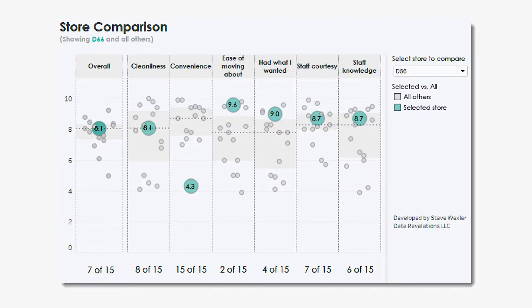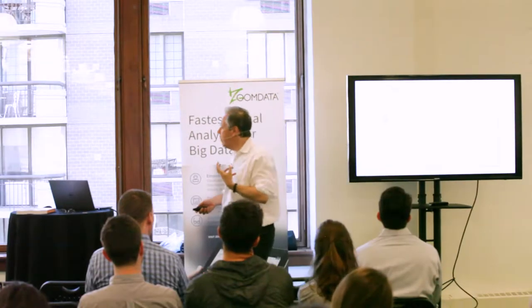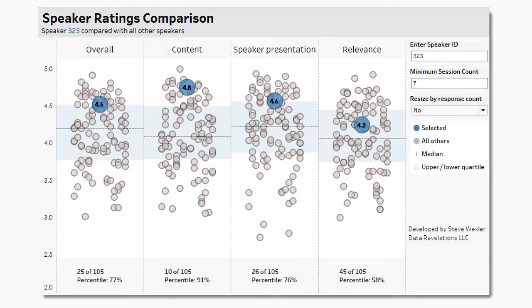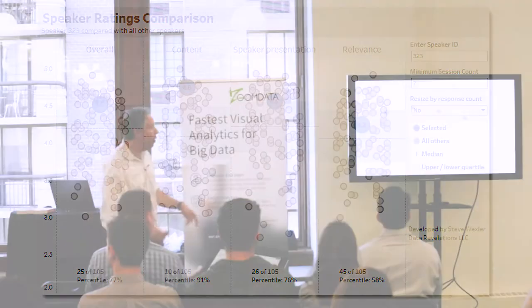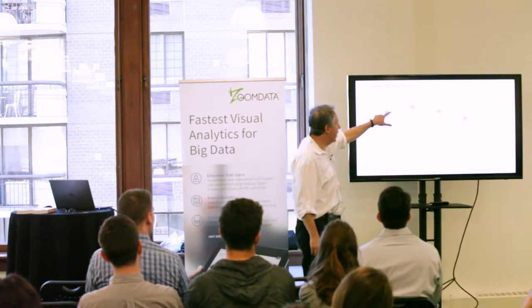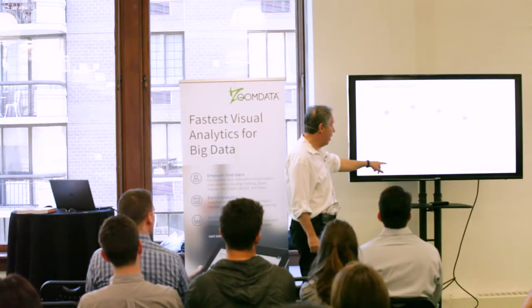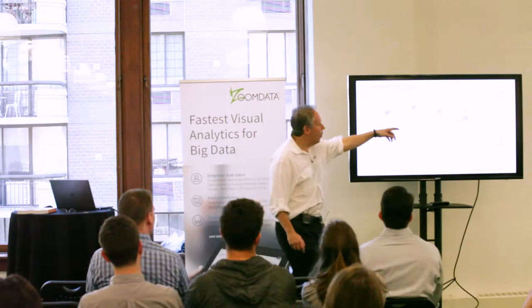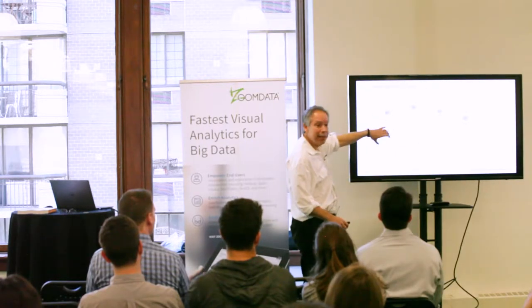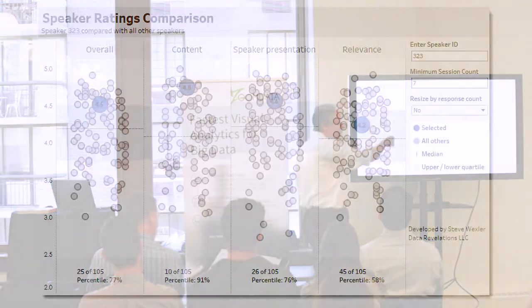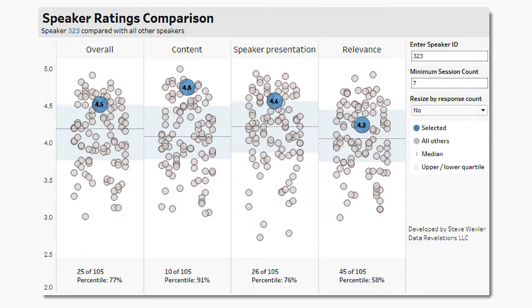This is almost like a form of gamification — you want to see how you're doing, how you're progressing over time. This is from the Tableau speaker conference: we have speaker ratings where people could type in and see how they did. Each dot is a different session. A person puts their ID in and can see how they did compared to others — 25 out of 105, 77th percentile. They did really well in content and speaker presentation, not so much in relevance. This is called a jitter plot — a strip plot with a jitter — so instead of having all the dots on top of each other like a box plot, you can see how the different things skew.